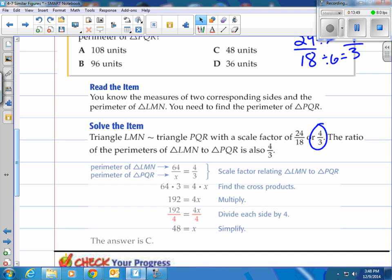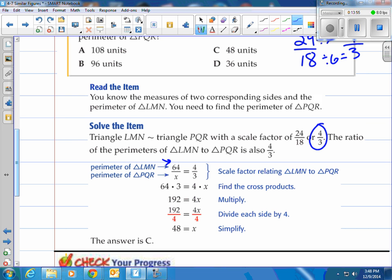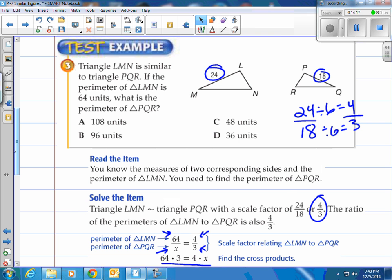So what do we do? We set it equal. Putting 64 on top. What we're looking for on bottom, calling it x. And then we write our scale factor over on the left. 4 over 3. Of course, we cross multiply. And then we solve, dividing by 4 on the last step. And that's equal to 48. So if we look at the answers up here, obviously that's going to be C.